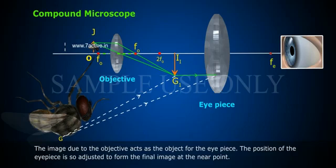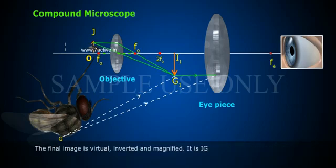The image due to the objective acts as the object for the eyepiece. The position of the eyepiece is so adjusted to form the final image at the near point. The final image is virtual, inverted and magnified.